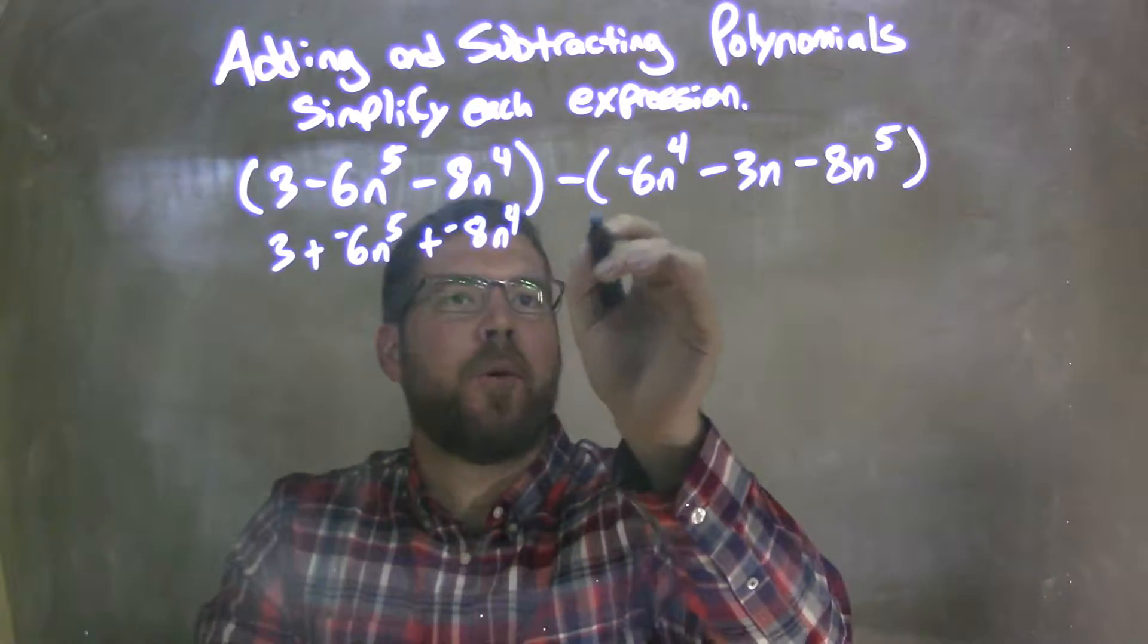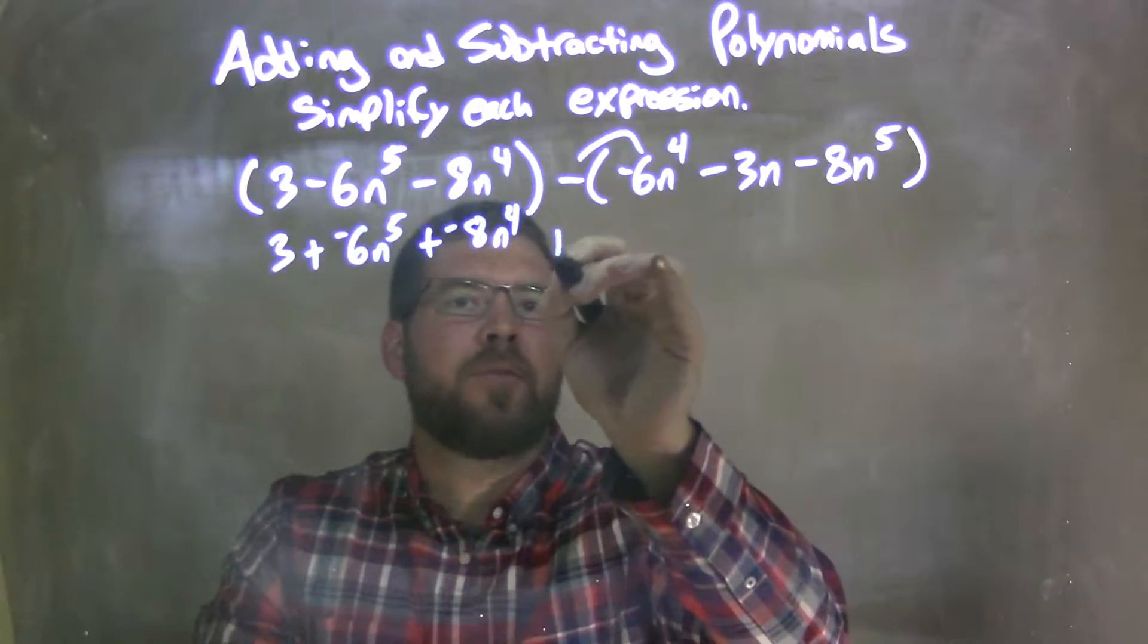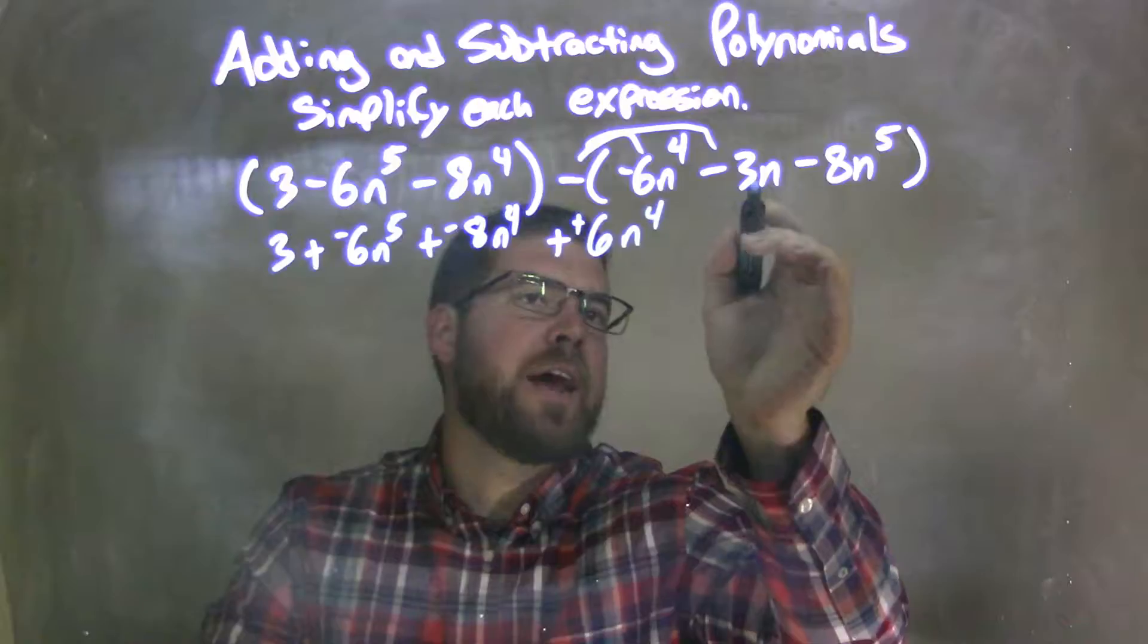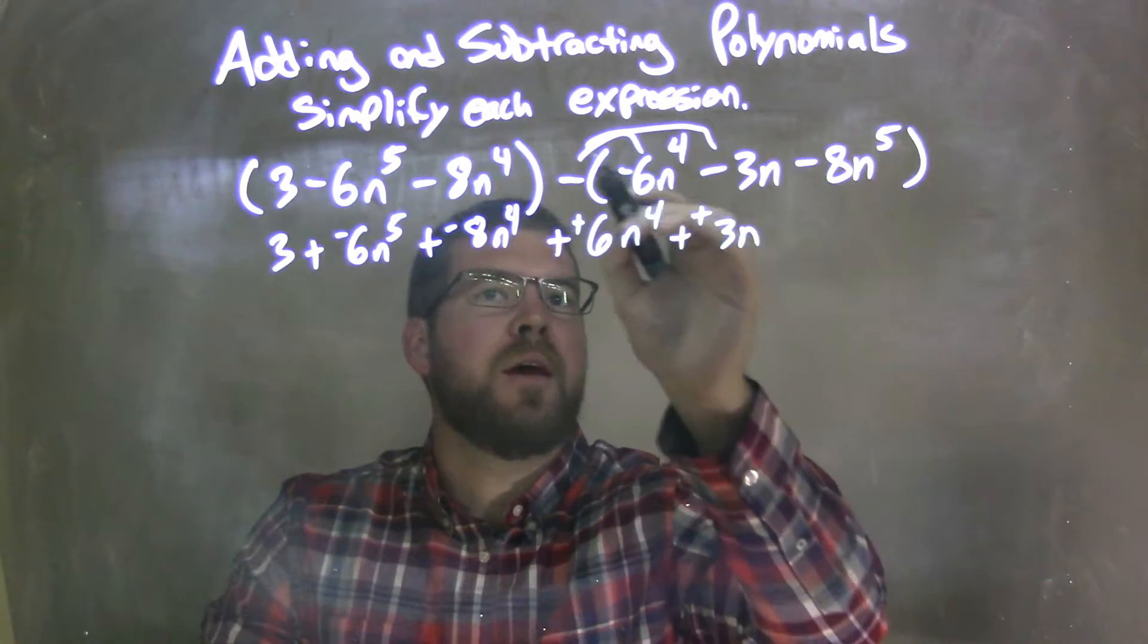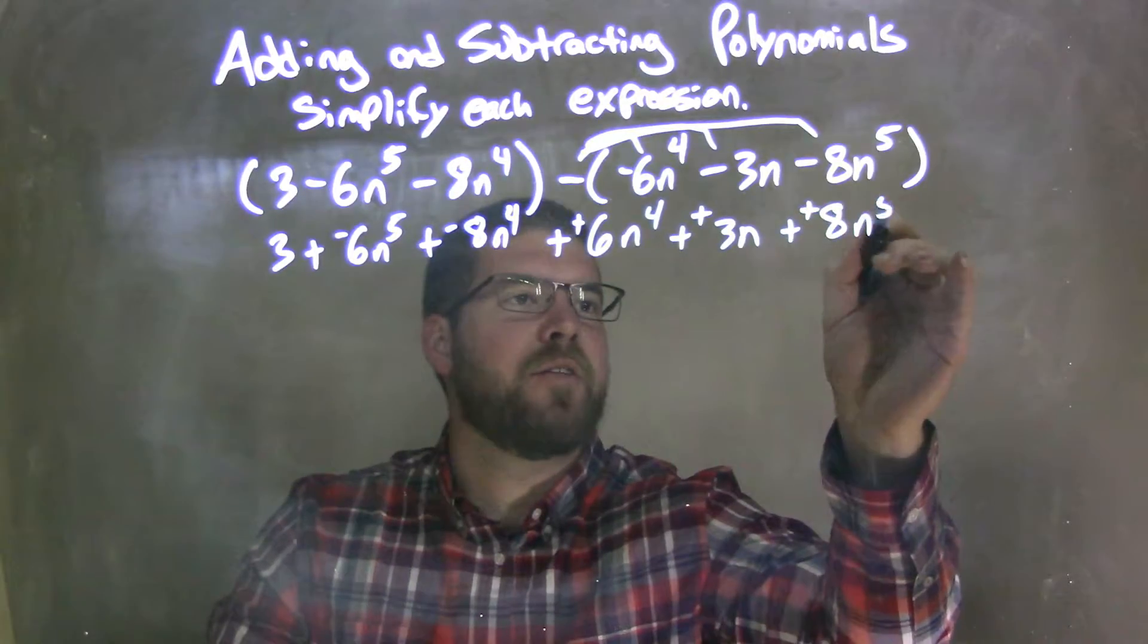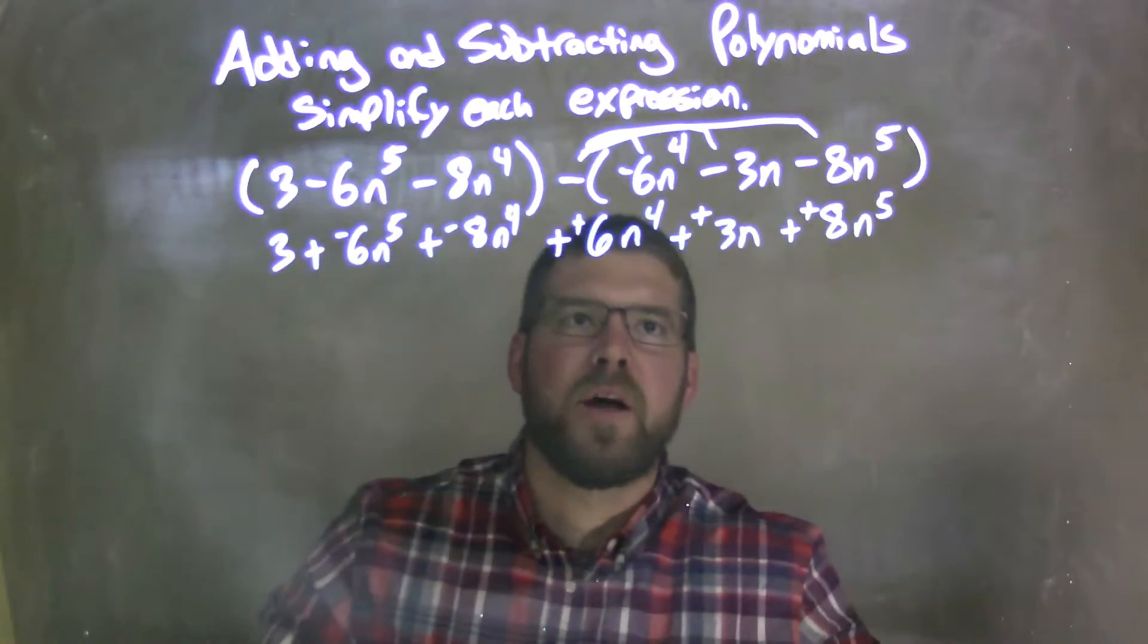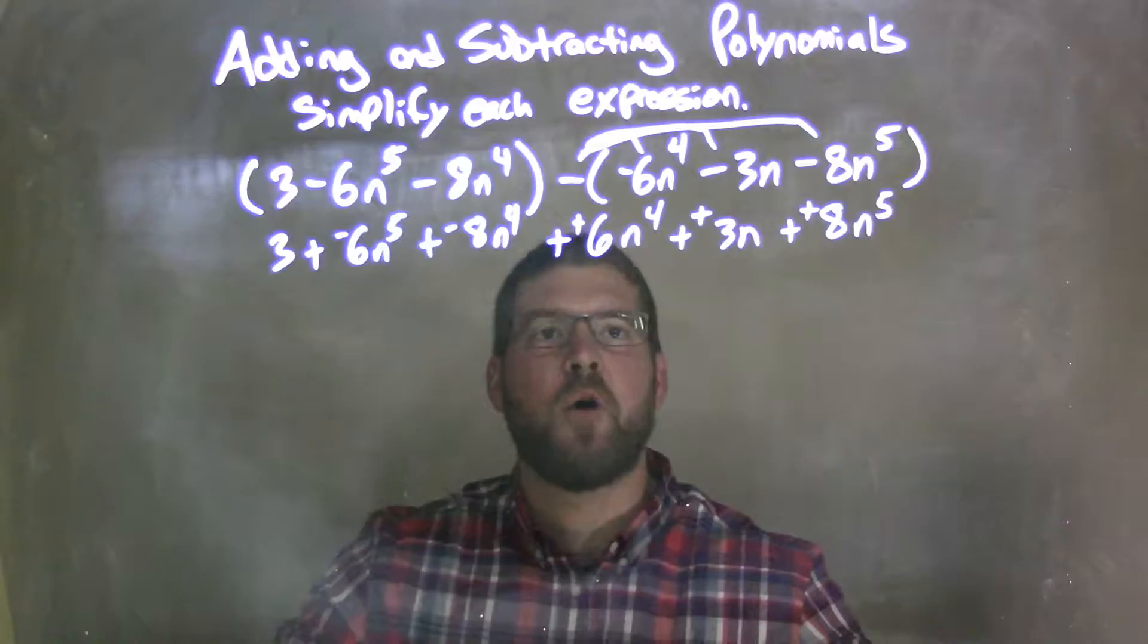Now I'm going to distribute that negative across to all parts. And this one's tricky. So we distribute the negative into negative 6n to the 4th as plus a positive 6n to the 4th. Distribute again to the negative 3n here, so two negatives make it plus a positive 3n.